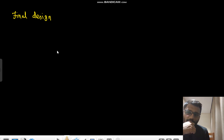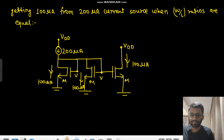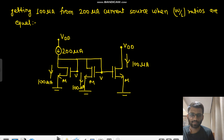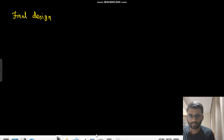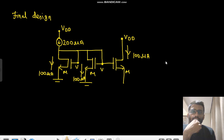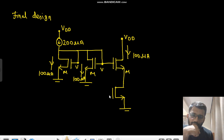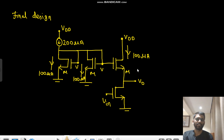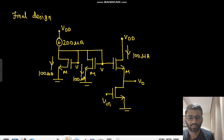So the final design: we have got 100 micro ampere, and here we connect a common source amplifier — this is Vin and this is Vout — so we have a 100 micro ampere current source as the load. Take a moment to think: is this design correct or is it wrong?